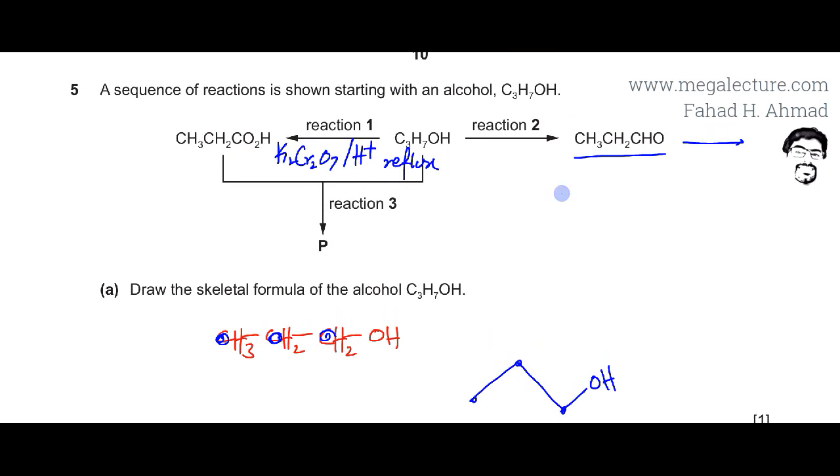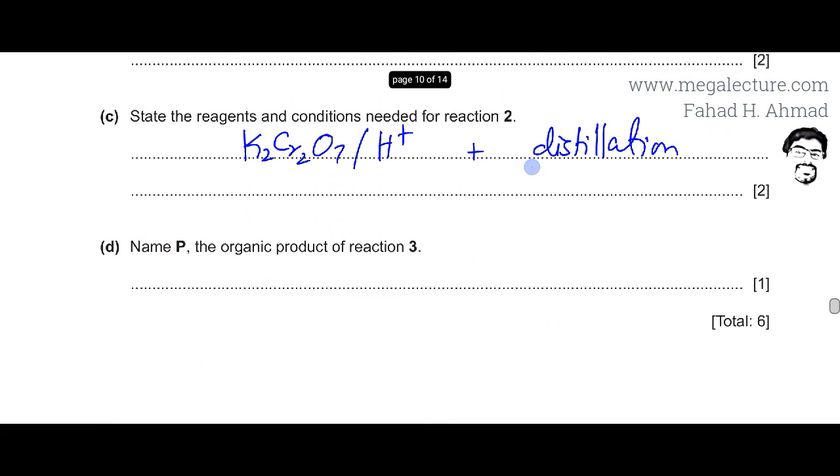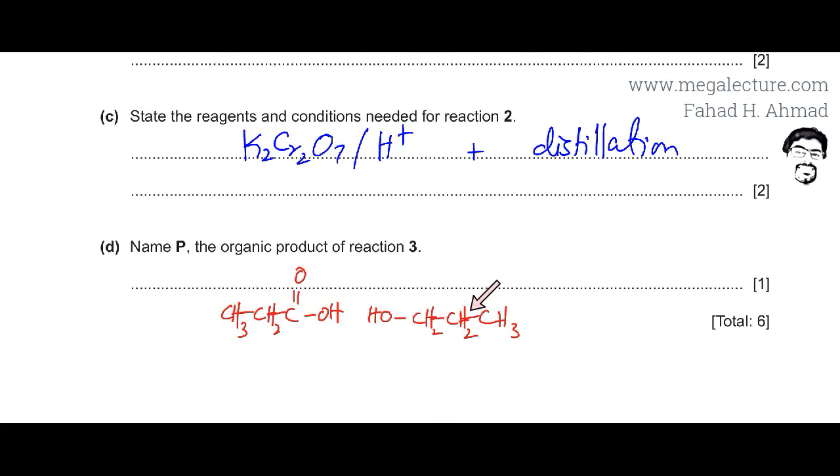So I can make that ester over here and then we're going to try and name it. So I've drawn the propanoic acid. I've drawn the molecule of propanol. How are esters formed? The OH is lost from the carboxylic acid. The H is lost from the alcohol. Let's remove the two. And these two eventually combine with each other and they form an ester.